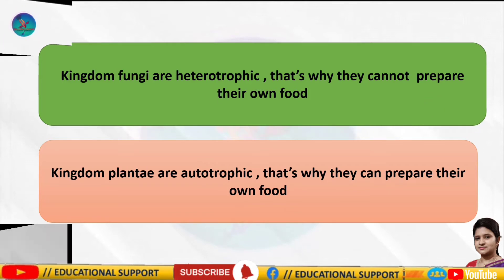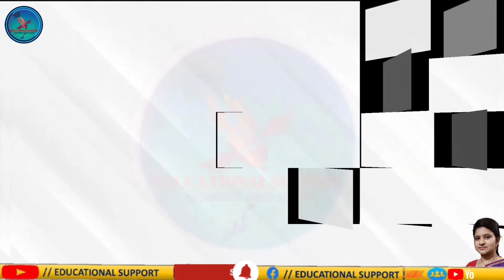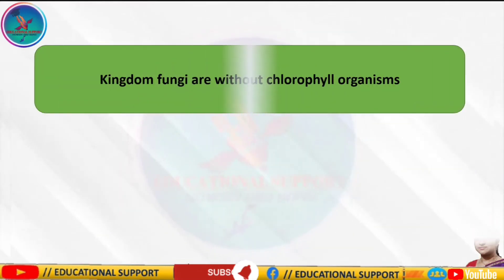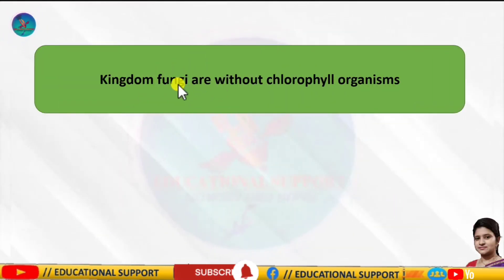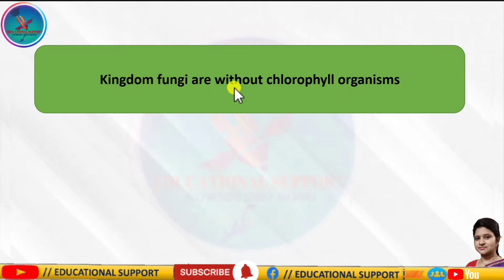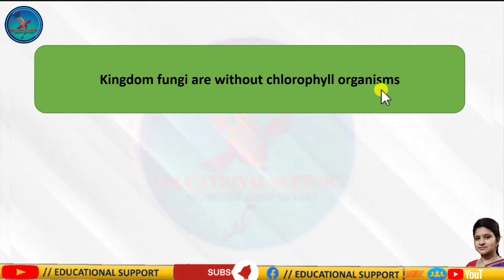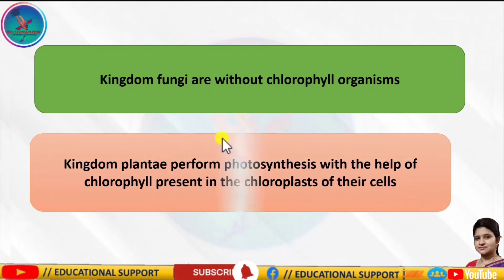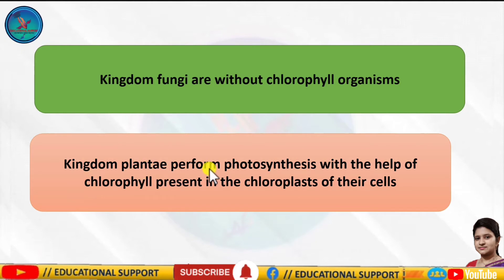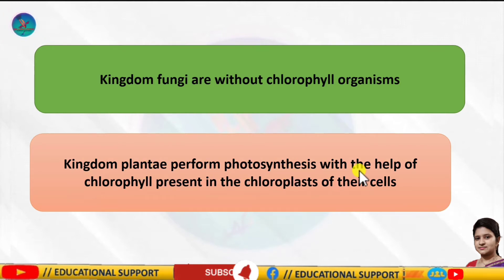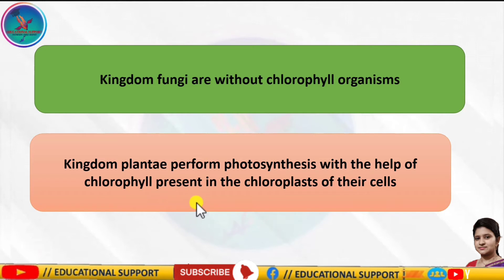The next difference is that kingdom fungi are organisms without chlorophyll, but kingdom plantae perform photosynthesis with the help of chlorophyll present in the chloroplasts of their cells.